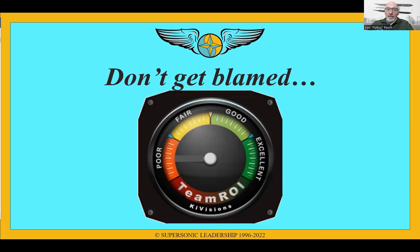You can see in the yellow or gold the labor costs going up, and in the blue, productivity going down. Yeah, just the opposite of what we want. Don't get blamed. Use this gauge — it's called the Team ROI gauge. It is ours, our construct at Supersonic Leadership. To begin to use this tool, where do you start? Most people start at the absolute wrong spot.